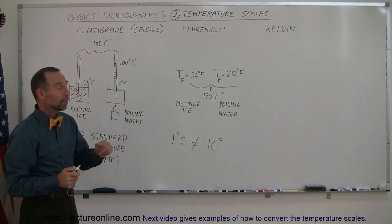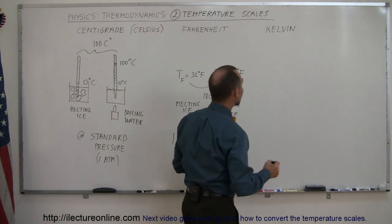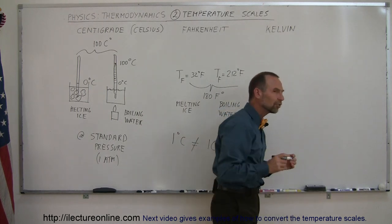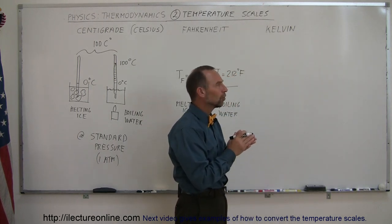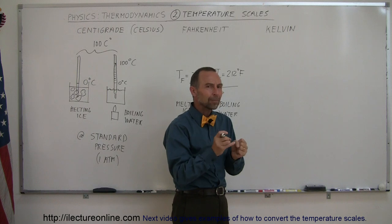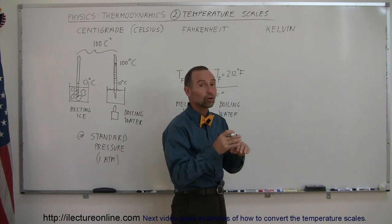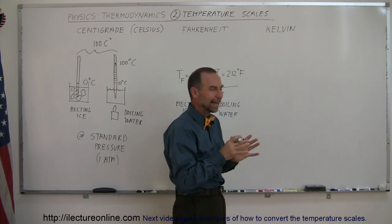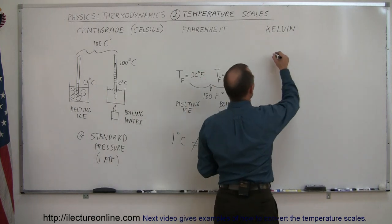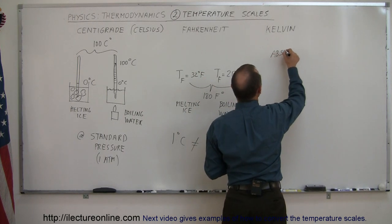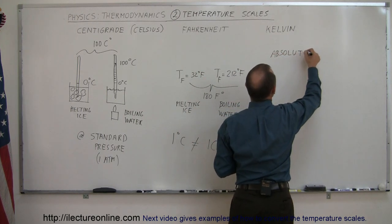Now we have one more scale. That scale is the Kelvin scale. Now the Kelvin scale was formed because we recognize that there is an absolute temperature in the universe, the coldest it can possibly get, and that's called absolute zero. Now, how does something become absolute zero in temperature?